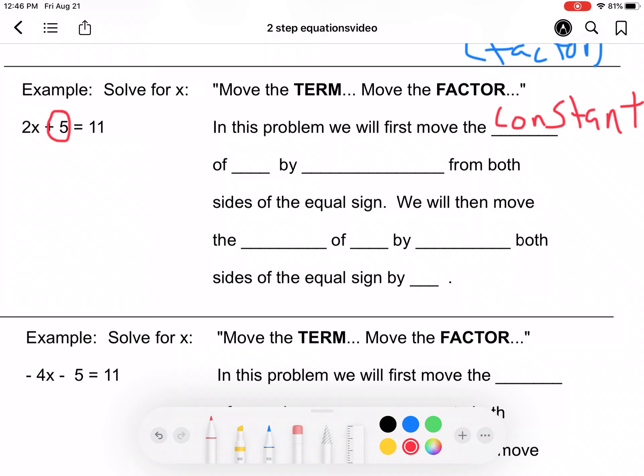So we're going to move the 5. And how are we going to move the 5? Well, the first thing we need to look to see is what is happening to the 5. The 5 is being added, so the inverse of added would be to subtract it.